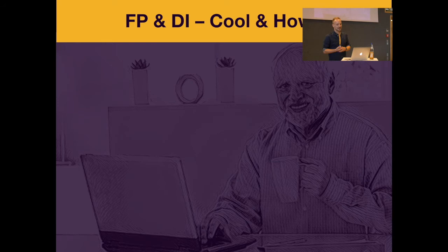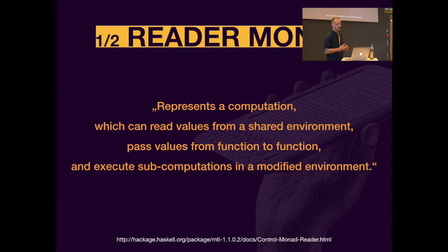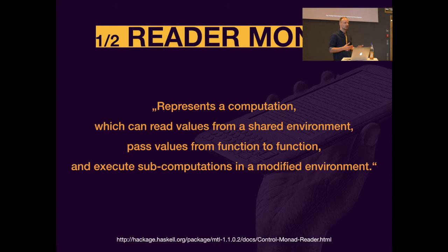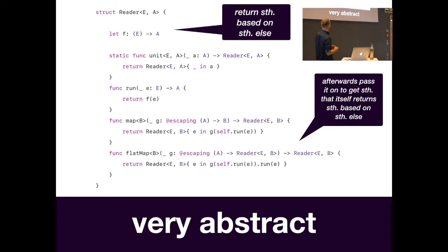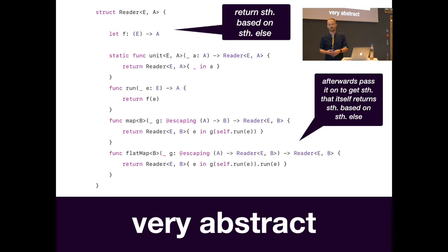Remember those two steps: step one — pass on; step two — keep it. We'll look at them step by step and transform them into functional programming. Step one is the reader monad. The official Haskell documentation says it represents a computation which can read values from a shared environment, pass values from function to function, and execute subcomputations in a modified environment. In a Swift implementation, the reader — a monadic type — is nothing else than a wrapper for a function `f` that takes a value of type `E` (the environment) and returns a value of type `A` (what you ask for).